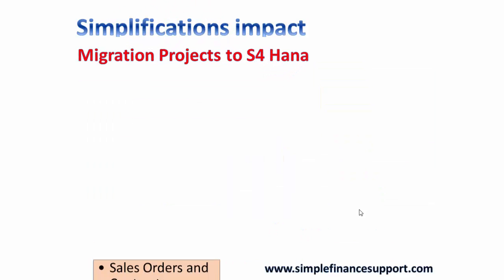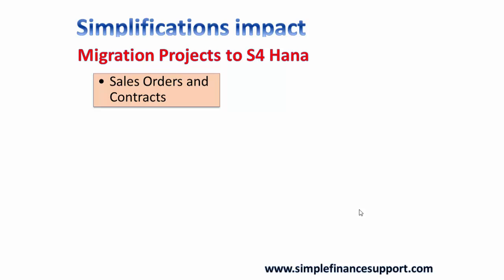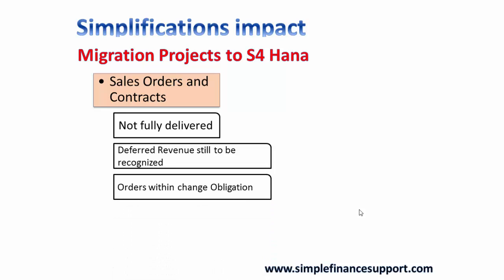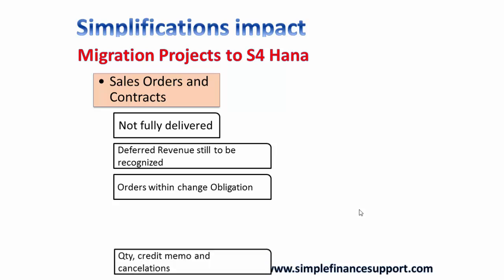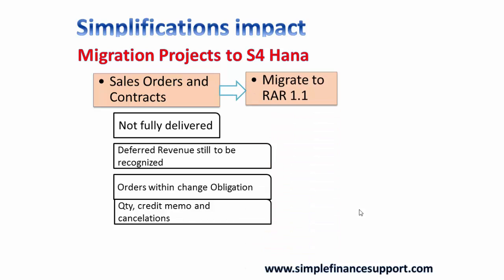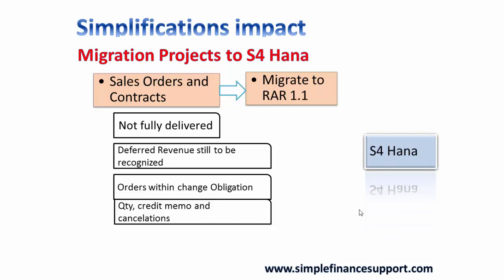In a migration project, sales orders and contracts that are not yet fulfilled — where deferred revenue still exists or there are obligations to change, such as quantity changes or credit memos subject to cancellation — all these kinds of sales orders need to be moved to the Revenue Accounting and Reporting module, RAR version 1.1. If you are going to S4 HANA, the migration will take place automatically, as the RAR module is natively integrated with the S4 HANA architecture.